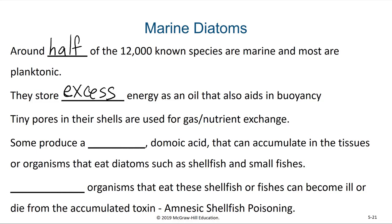When we look at the silica frustule of a diatom, there are tiny pores within their shell, and this allows gases and nutrients to exchange with the seawater through diffusion. Some diatoms produce a toxin known as domoic acid, and when certain species of diatoms are in bloom, that toxin can accumulate in the tissues of organisms that eat diatoms, such as shellfish and small fish. When larger organisms eat those smaller ones, they can become ill or even die from the accumulated toxin.